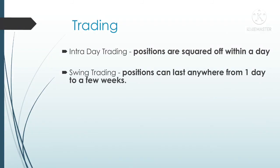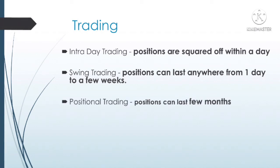The next type of trading is swing trading. In swing trading, the positions can last from one day to certain weeks. Generally a person will buy the stock and hold it for some weeks, and when he gets some profit, he will sell the stocks and take the profits. Next is positional trading, where positions will last for few months. A simple difference between positional and swing trading is: in positional trading, the trading lasts for few months, whereas in swing trading, it lasts for only few weeks.